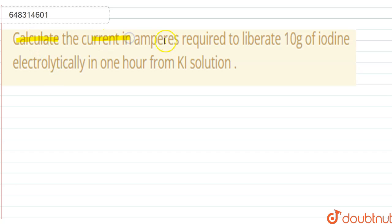Calculate the current in amperes required to liberate 10 gram of iodine electrolytically in one hour from potassium iodide solution.